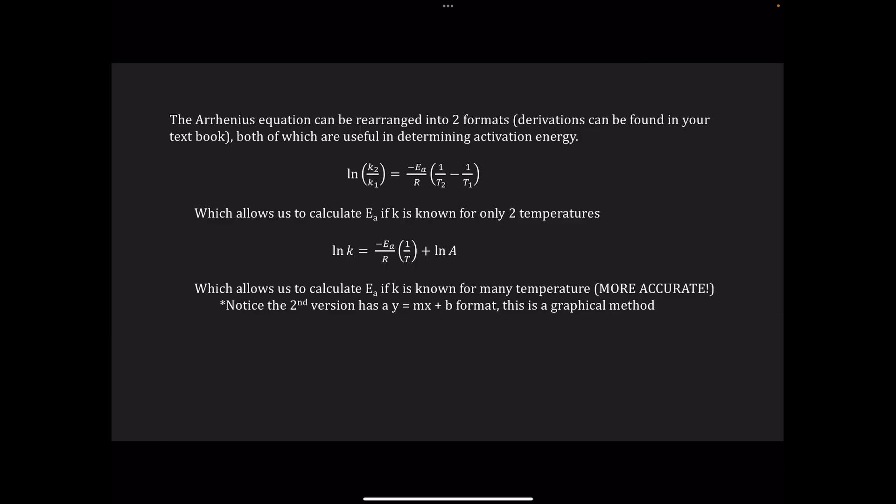The Arrhenius equation can be rearranged into two formats — derivations for those can be found in your textbook. Both formats are useful in determining activation energy. Our first equation says the natural log of K2 over K1 equals negative Ea over R, times 1 over T2 minus 1 over T1.